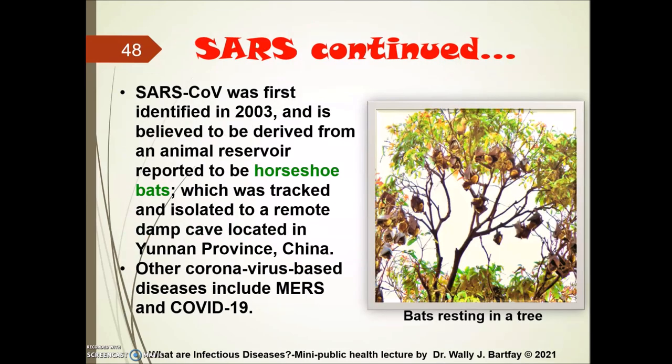SARS was first identified in 2003 and is believed to be derived from an animal reservoir — horseshoe bats located in southern China — tracked and isolated to a remote dam cave in the Yunnan province. Other coronavirus-based diseases include MERS, or Middle Eastern Respiratory Syndrome, which has been tracked back to camels, and COVID-19, which is also believed to be of zoonotic origins.